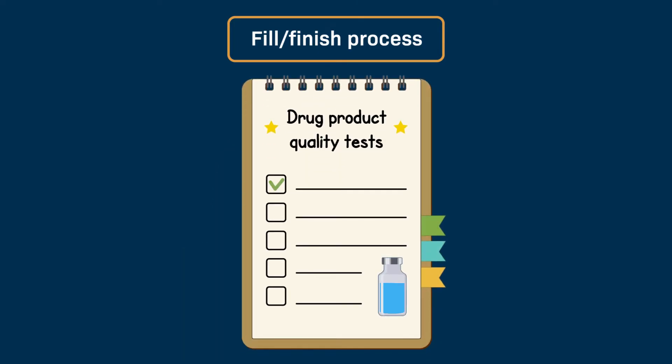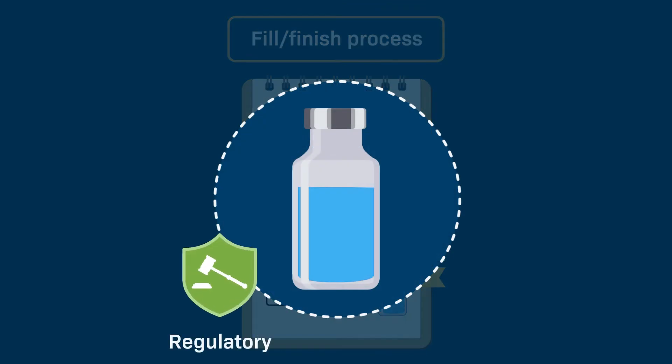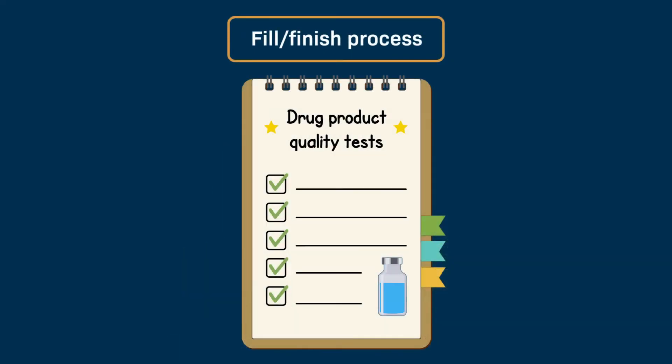Multiple tests are performed throughout the manufacture of a drug product to ensure that regulatory and quality standards are maintained at each stage of the process. One example of a drug product quality test is the visual inspection of filled containers during the fill-finish process.